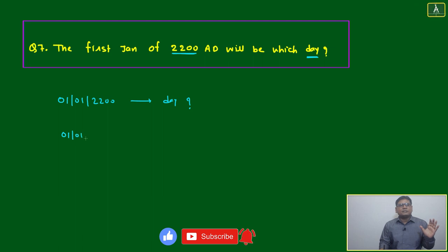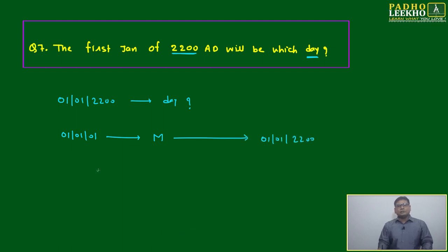This is Monday. First January, first AD was Monday. Based on that, we will move to first January 2200. What is the nearest multiple of 400? 2000. It will be out. Remaining is 200.